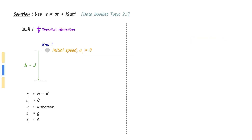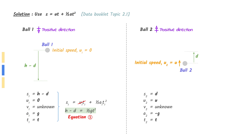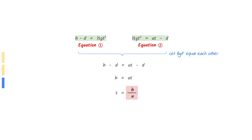To find the time, let's focus on one ball at a time. Ball one, which is initially at rest, travels downwards. Taking downward as the positive direction, use the equation given in the data booklet to get your first equation. Do the same for ball two. We are told that the initial velocity is U. Take upwards as the positive direction and use the same formula to get your second equation. The equation has been intentionally rearranged to make half G T squared the subject. Put the two equations together.